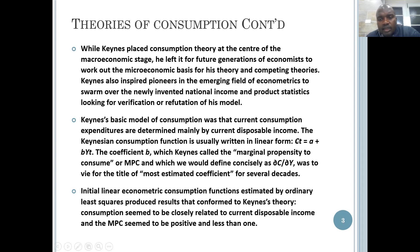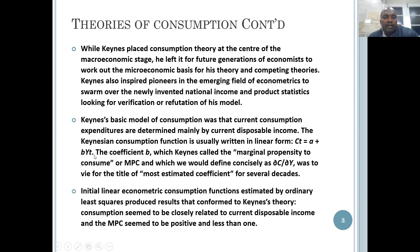We see that consumption CT — aggregate consumption represented by CT — is equal to A, which stands for autonomous consumption, plus BYT. BYT is the income-induced part of consumption, where B is the coefficient or the marginal propensity to consume, and YT is the current level of aggregate income, aggregate production, or national income in an economy.